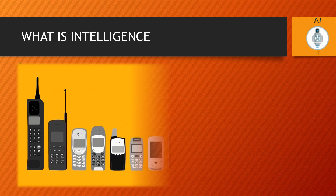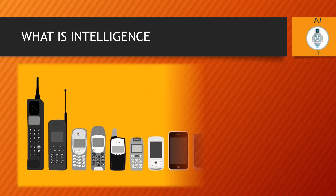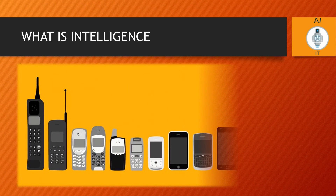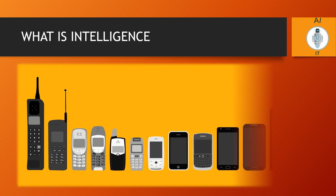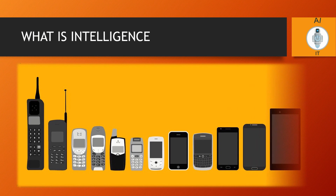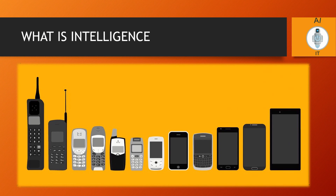Smartphones can help in navigating, listening to music, watching movies, taking pictures and videos, and a lot more. So we see machines becoming more sophisticated and smart.